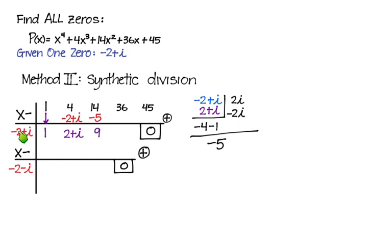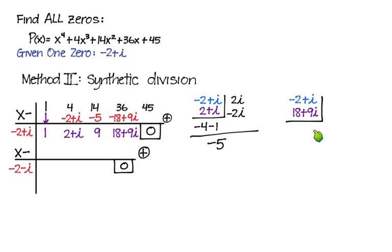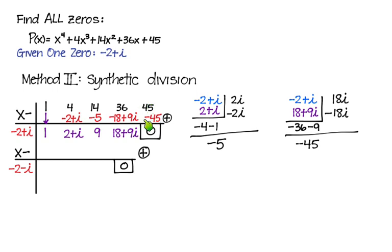Now we multiply 9 times (negative 2 plus i): that gives negative 18 plus 9i. Adding 36 and negative 18 gives positive 18, with positive 9i remaining. We then multiply (negative 2 plus i) times (18 plus 9i): straight down gives negative 36 minus 9, which is negative 45; cross terms give 18i and negative 18i, which cancel. So the result is negative 45. We write that in the synthetic division, add to get zero — no remainder. The first division is complete.